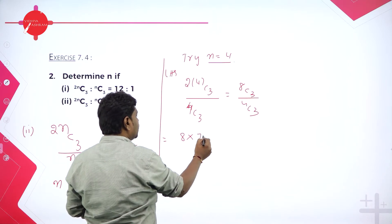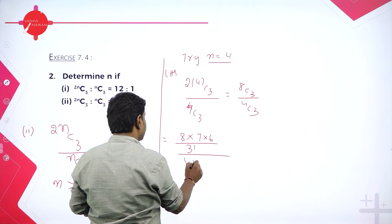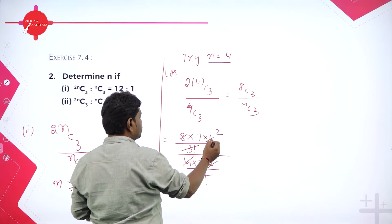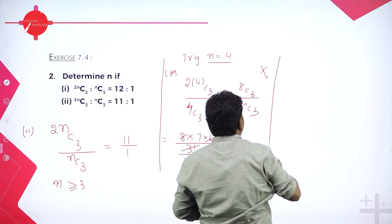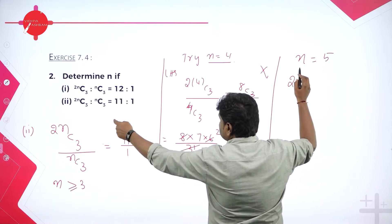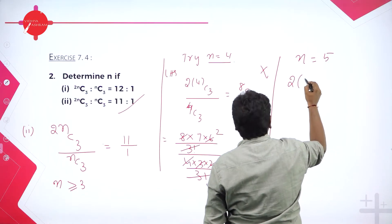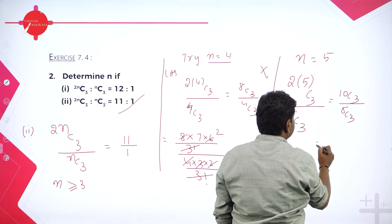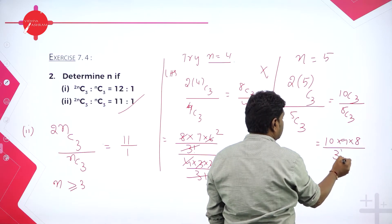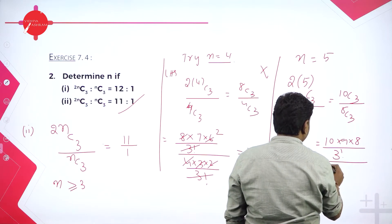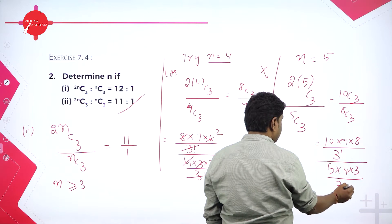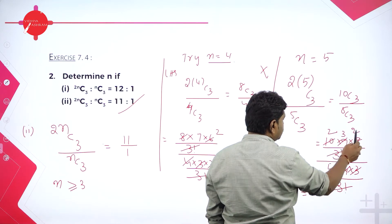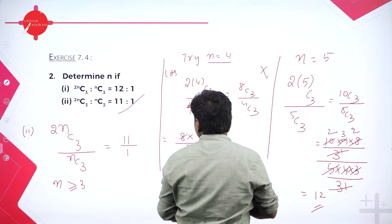Continuing with n=4: 8C3 divided by 4C3. 8C3 is 8×7×6 divided by 3 factorial; 4C3 is 4×3×2 divided by 3 factorial. The 3 factorials cancel. Simplifying gives 12. But we need 11, so n=4 fails. Try n=5: 10C3 divided by 5C3 — that is 10×9×8 divided by 3 factorial over 5×4×3 divided by 3 factorial. Simplifying gives 12 again. So n=5 also fails.